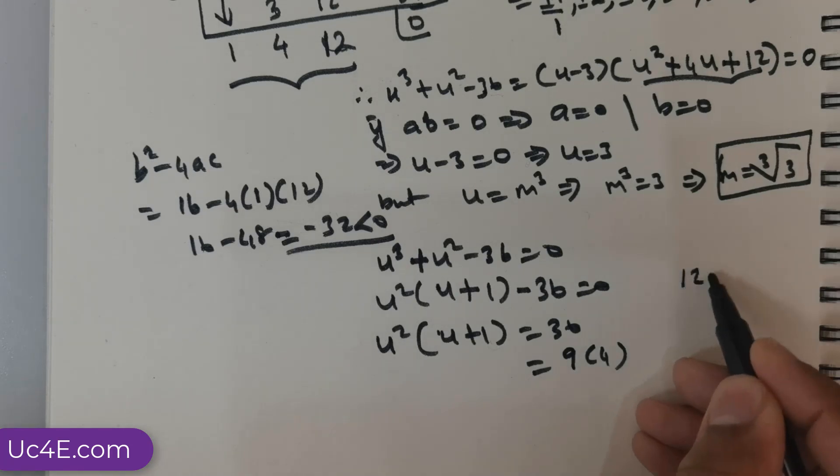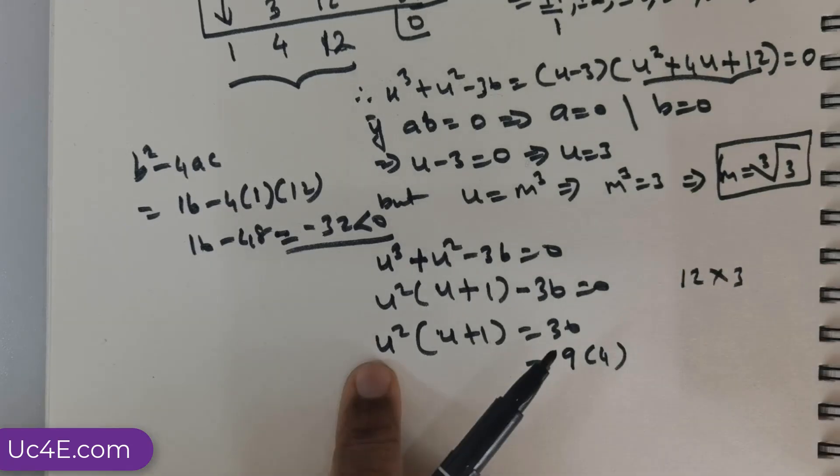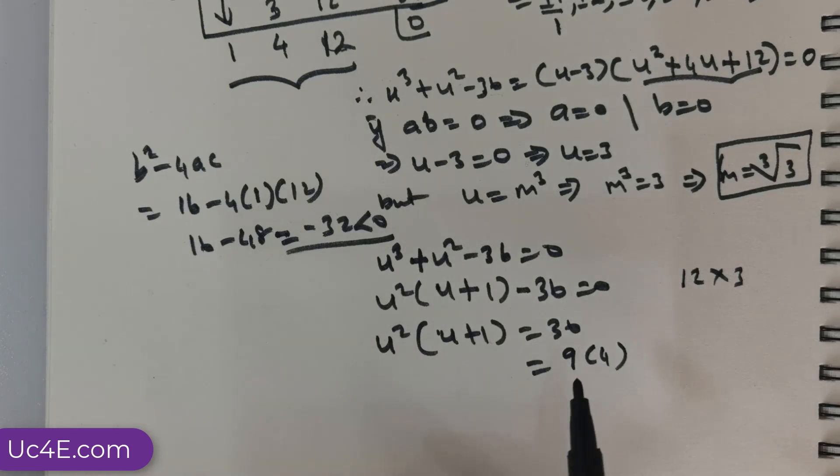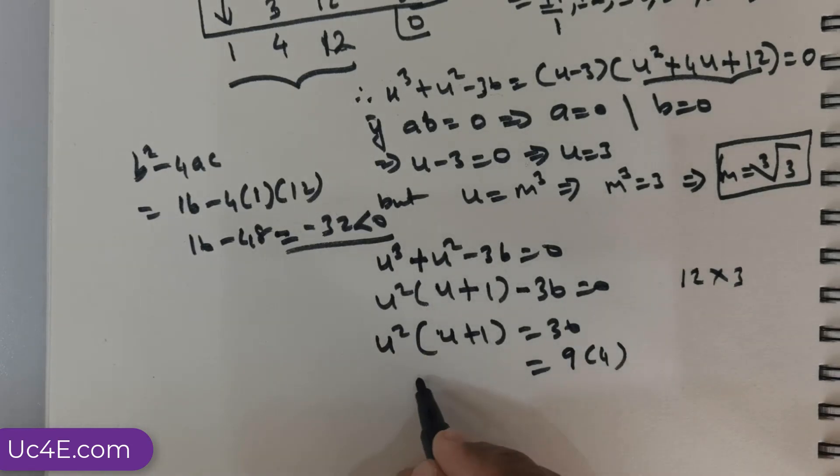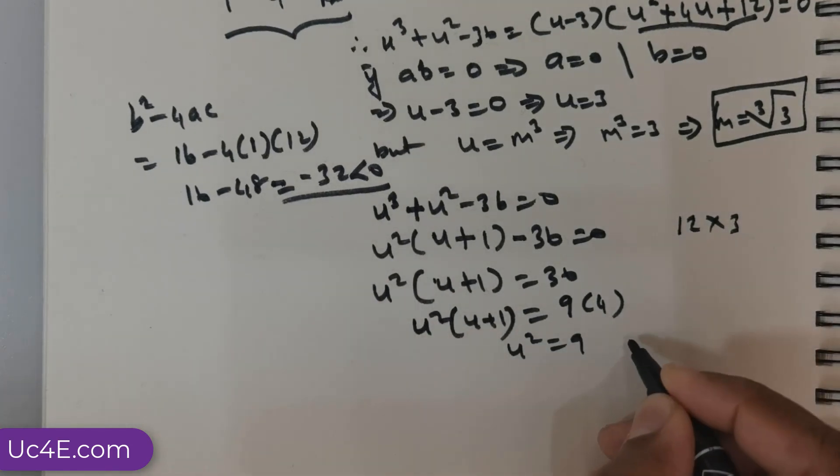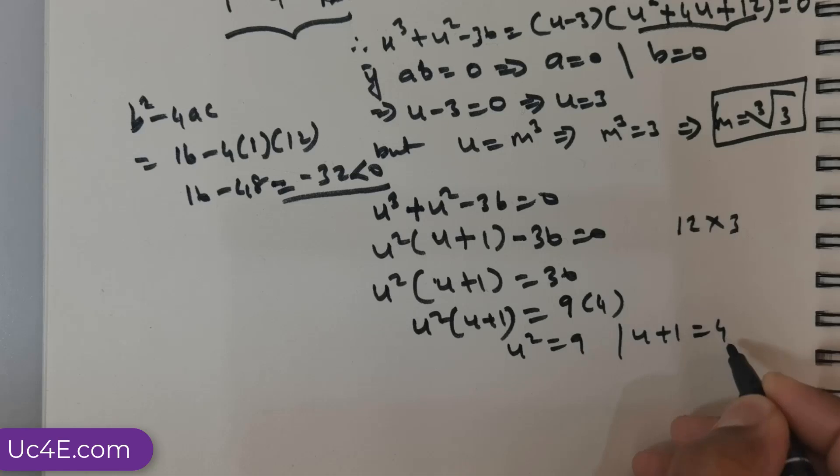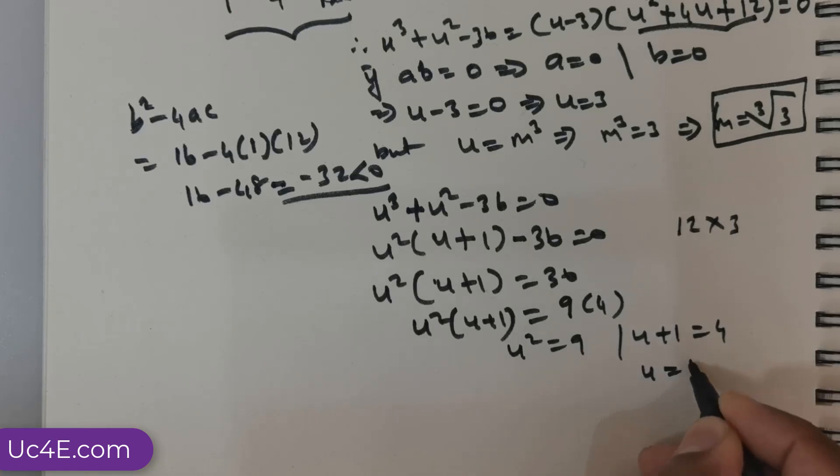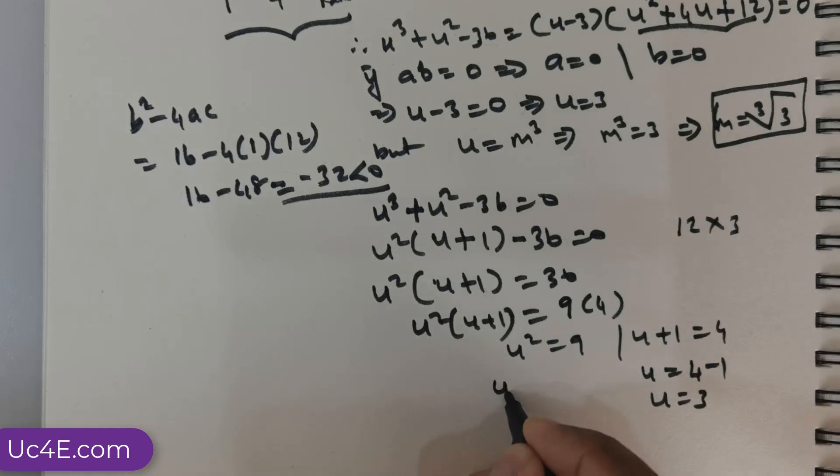I do not want to have 12. 12 and 3 also gives me 36. But, I would not be able to handle this u squared. So, my idea is to have a perfect square. So, I got u^2(u + 1). So, this would mean I can equate u^2 = 9 and (u + 1) = 4. So, u = 4 - 1. So, u = 3 here.